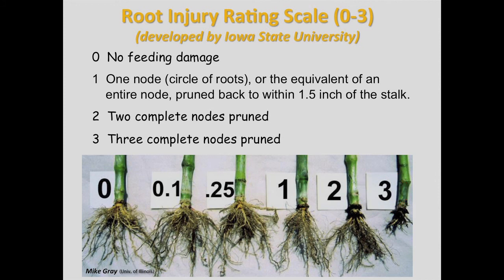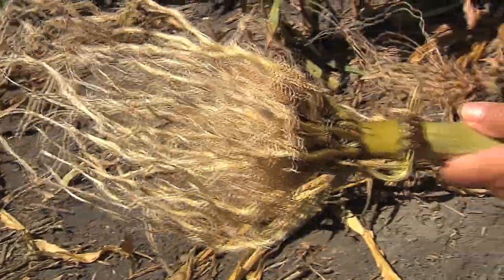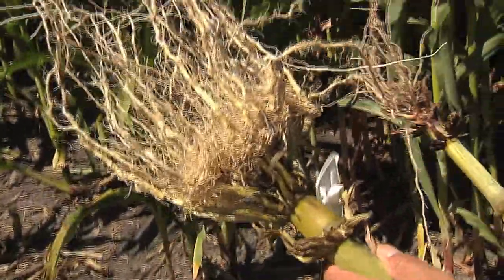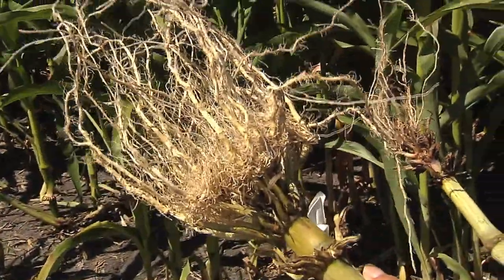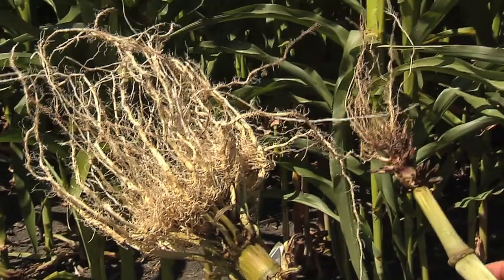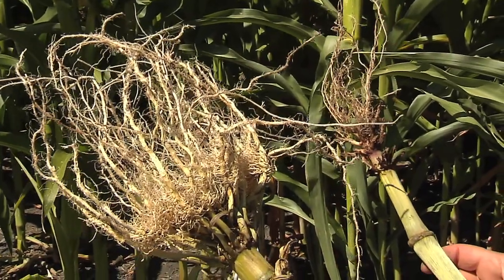This root rating scale system is linear and directly related to plant lodging and yield loss. Root injury that exceeds 0.25 is likely to cause economic loss. You can compare a healthy root mass on the left with the corn rootworm damaged root on the right.